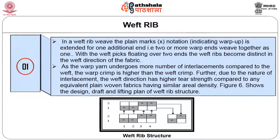In a weft rib weave, the plain notation is extended for one or more additional warp ends — that is, two or more warp ends weave together as one. With the weft pick floating over two ends, the weft ribs become distinct in the weft direction of the fabric. As the warp yarn undergoes more interlacements compared to the weft, the warp crimp is higher than the weft crimp. Due to the nature of interlacement, the weft direction has higher tear strength compared to any equivalent plain fabric having similar aerial density. Figure 6 shows the lifting design, draft, and pick plan of the weft rib structure.